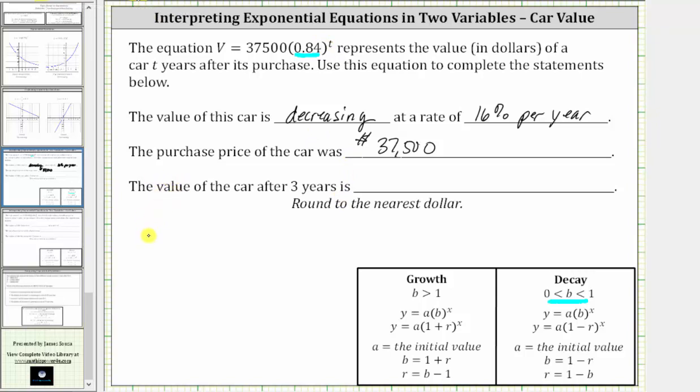So when t is three, v is equal to 37,500 times 0.84 raised to the power of three. And we are told to round to the nearest dollar. So now we go to the calculator.